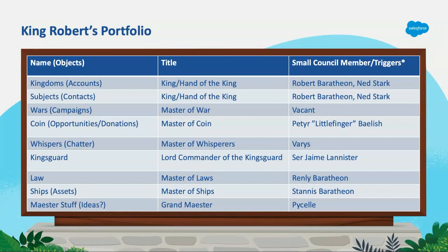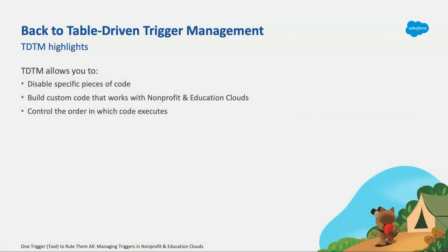Going one more level down: our objects are kingdoms (Accounts), subjects (Contacts), wars (Campaigns). Each has a title of the person in charge. For Maester — that one was difficult; if you have ideas what object that would be, I'd love to hear it. Someone suggested Knowledge — I like that, thank you, where were you yesterday!